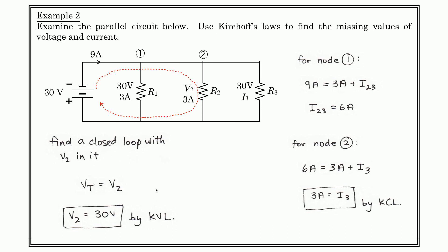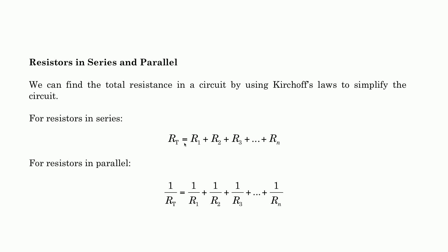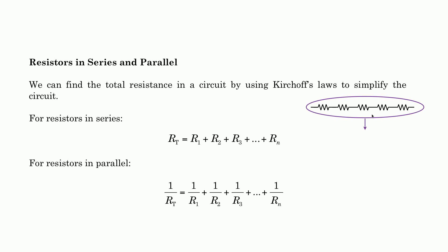That's a quick example of how to analyze some of these circuits — we'll spend more time in class working with them. Now let's look at resistors in series and parallel, because this is another way to analyze a circuit. For resistors in series, if I have a bunch of resistors connected one after another, the equivalent resistance RT is found by simply adding up the values: RT = R1 + R2 + R3 + R4 + R5.